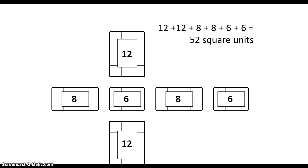What do you notice, to put down in your summary, about the areas of the opposite sides of the rectangular prism? This might help you later on with a simplified formula for surface area of a rectangular prism.